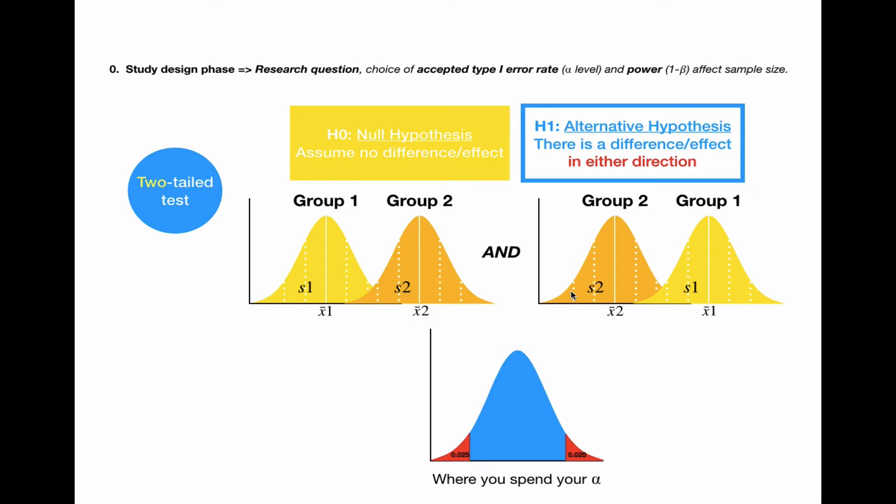If we look at the distribution of the parameters here in group 1 and group 2, you can see that the value of group 1 is lower than that of group 2, and here, the vice versa. If we perform our analysis with a two-tailed test, we're going to spend our alpha on both sides of the curve. So, you keep 0.025 on the left side and the right side, depending on which group has the higher value.